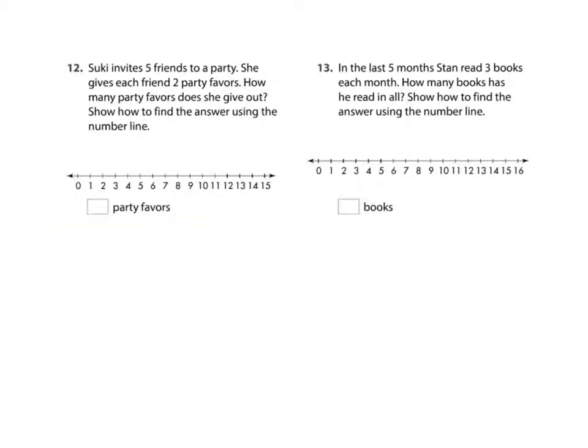Suki invites 5 friends to a party. She gives each friend 2 party favors. How many party favors does she give out? Show how to find the answer using the number line. So she has 5 friends, and they each get 2. So we're going to jump 5 times, and each jump will be 2. So here's 1, 2, 3, 4, 5. How many party favors does she give out?